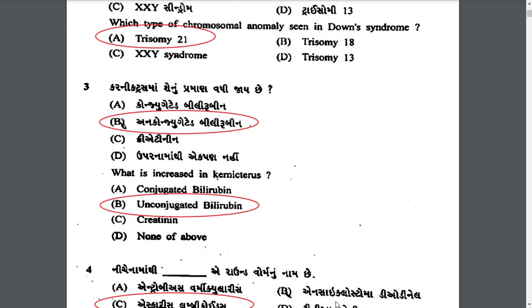What is increased in kernicterus? The answer is B — unconjugated bilirubin. Unconjugated bilirubin means indirect bilirubin, and this is what is elevated in kernicterus.